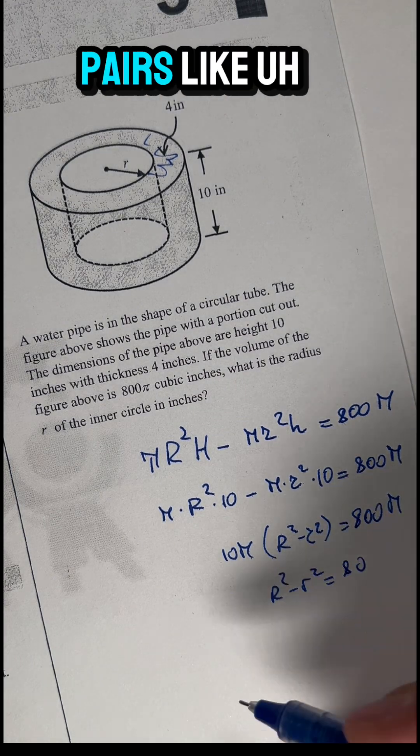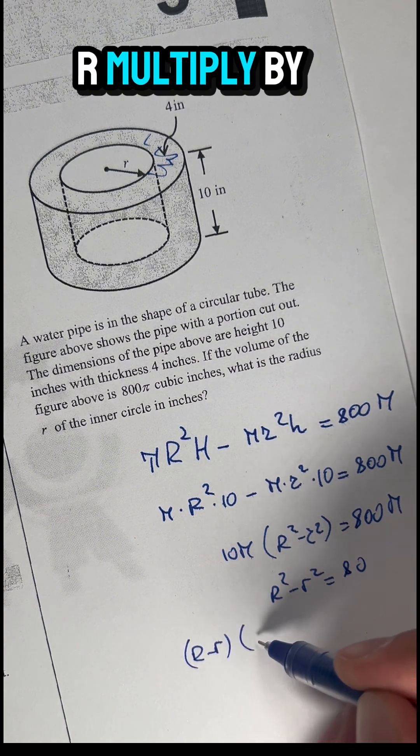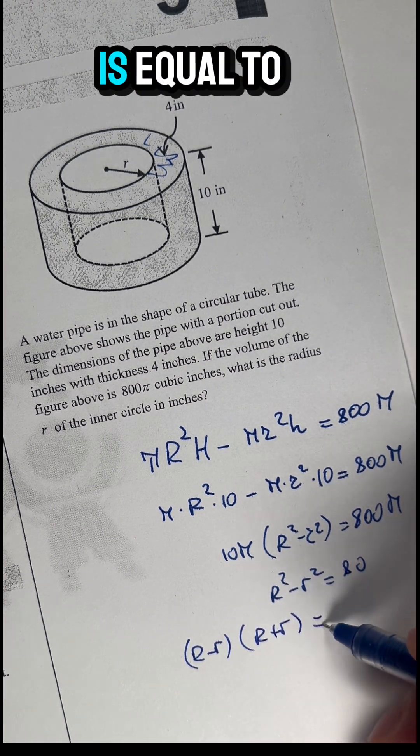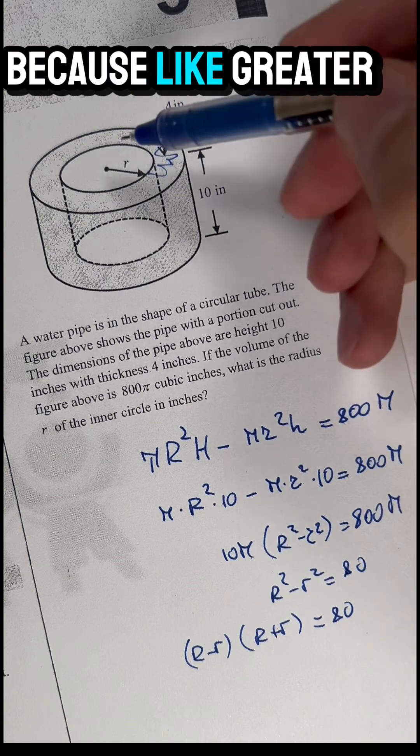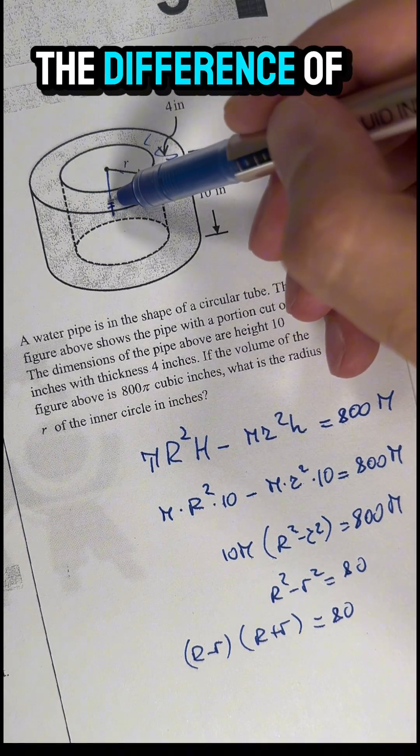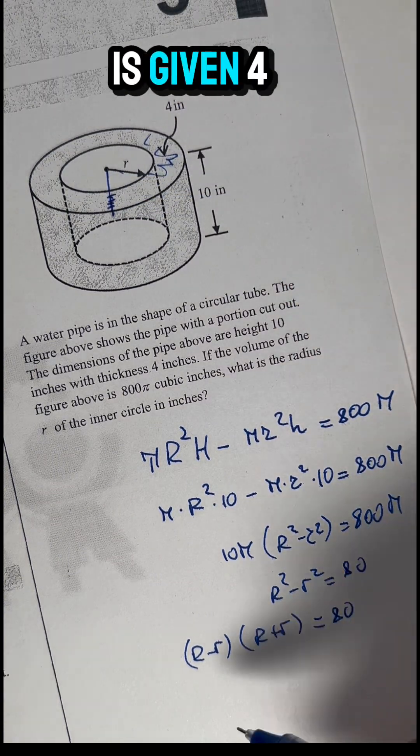Can I use a special pairs factorization? We can write (R - r) multiplied by (R + r) equals 80. The greater one minus the smaller one gives the thickness, which is 4.